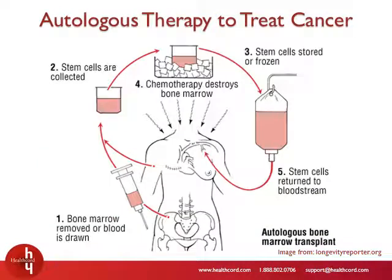For example, when autologous therapy is used to treat cancer, healthy stem cells are collected and extracted from a patient prior to chemotherapy. Following chemotherapy, damaged stem cells are replaced with the patient's own healthy stem cells.